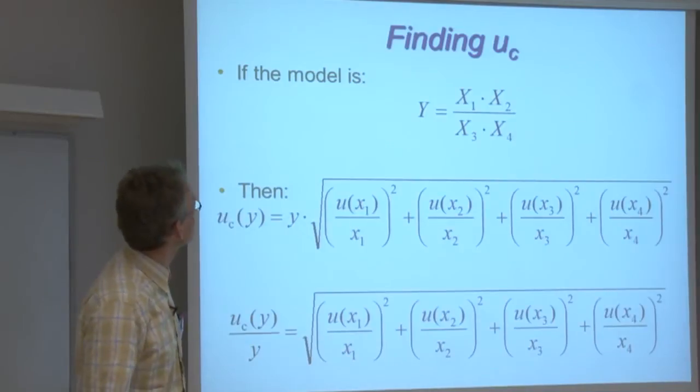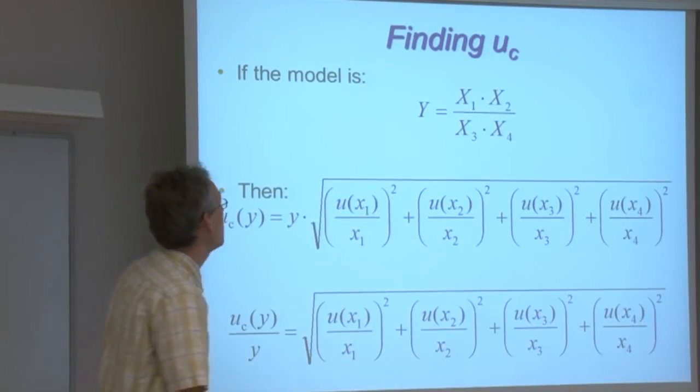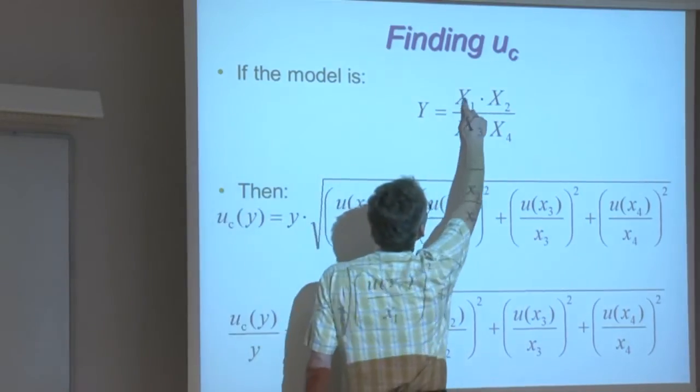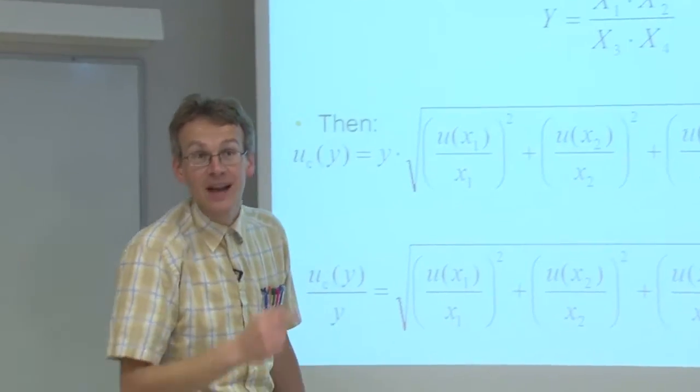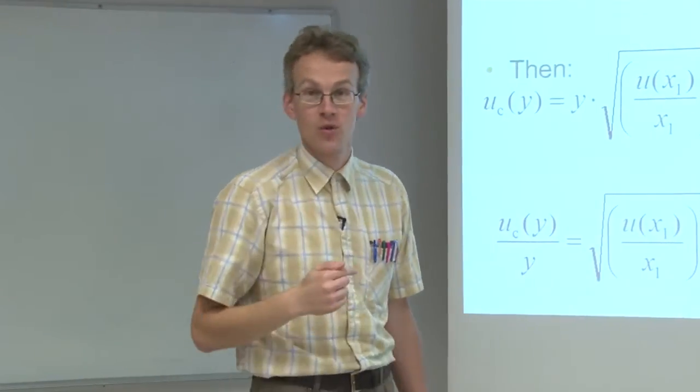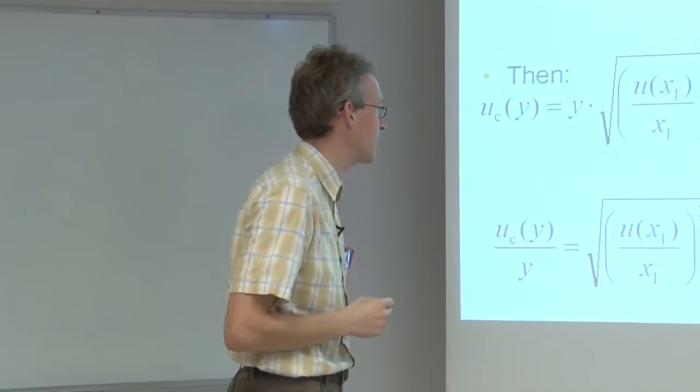Now, a second very common type of measurement model is a model that is composed only of multiplications and divisions. And in fact the titration model that we saw a few slides ago is a typical example of this. In this case now,